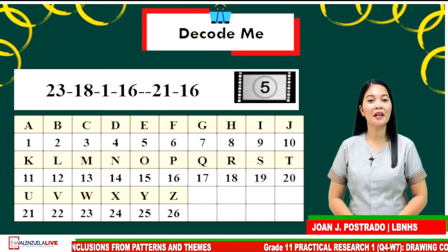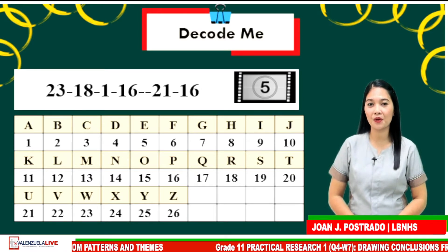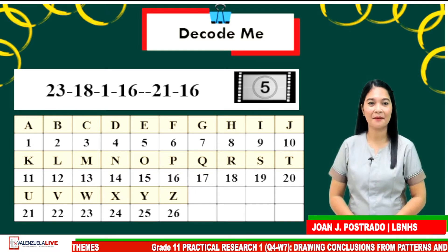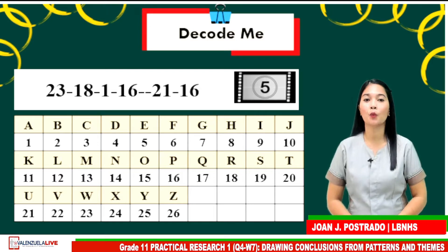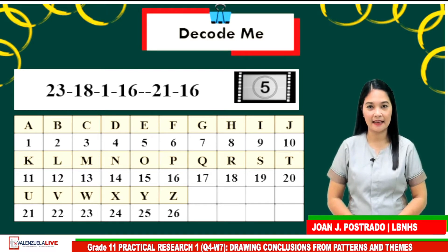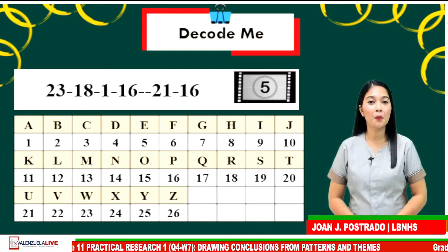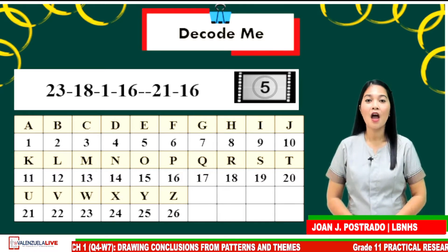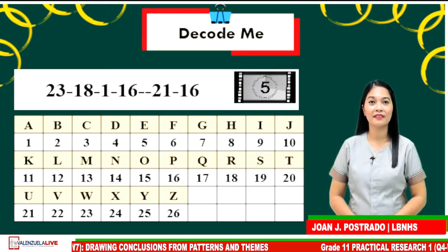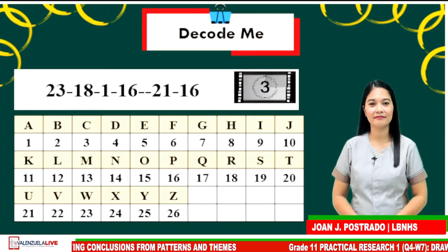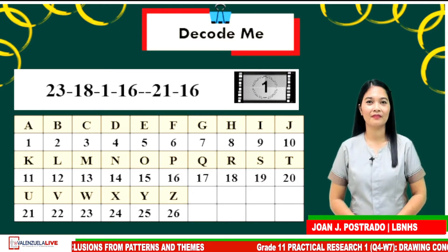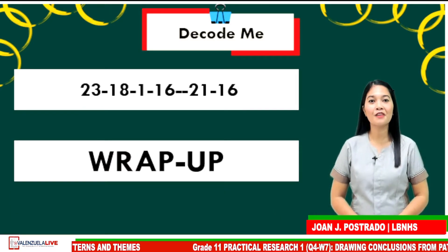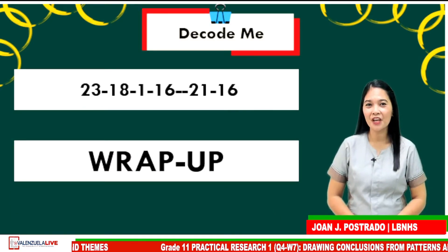Let's start the ball rolling. First set of numbers are 23, 18, 1, 16 — space — then 21 and 16. Clue: the word is synonymous with finalizing. If your answer is wrap up, you got it right. Good job, grade 11 students!